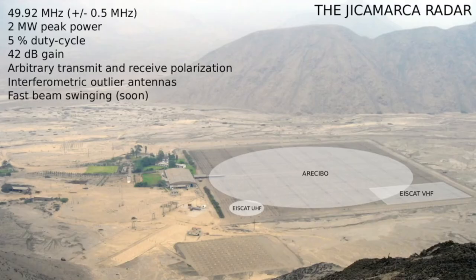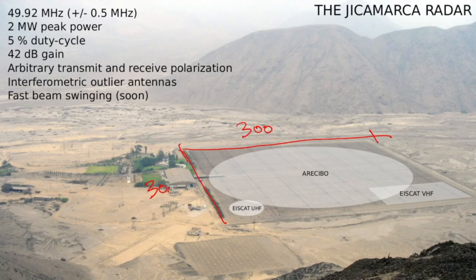The Jicamarca Observatory radar is located in Peru on the outskirts of Lima. It operates at 49.92 MHz and has a very large phased array antenna approximately 300 × 300 meters in size — slightly larger than the Arecibo dish. It has been used for a wide range of studies of the equatorial ionosphere. The main speciality is the ability to observe perpendicular to the magnetic field, enabling strong radar echoes from magnetic field-aligned irregularities. The radar can also be configured for radar imaging and for observing meteor head echo trajectories interferometrically.